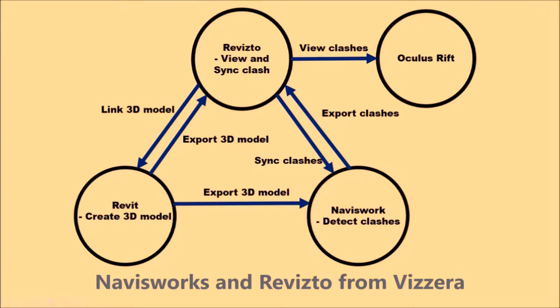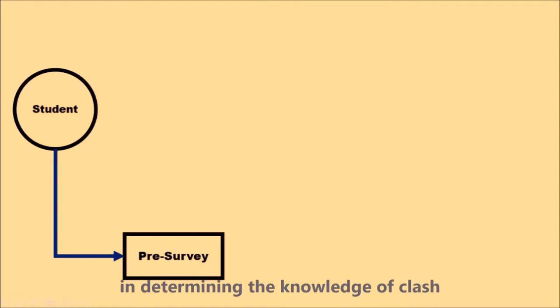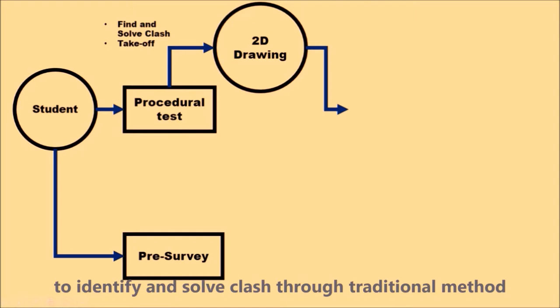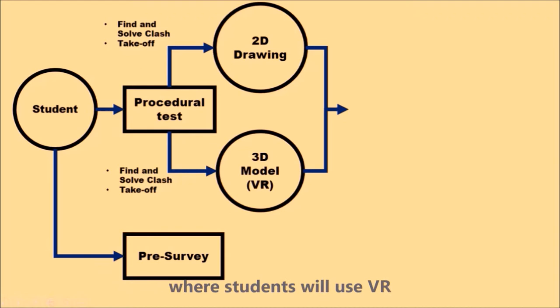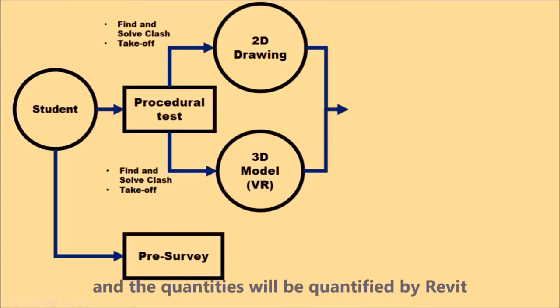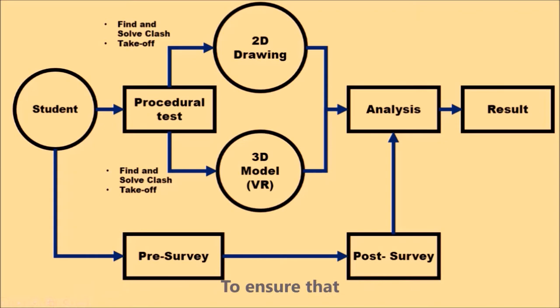In the beginning of this research, a pre-survey will be done to determine students' knowledge of clash among QS students, where students will then identify and solve clashes through the traditional method. A similar process is done in the second stage where students will use VR in finding and solving clashes, and the quantities will be quantified by Revit. Before the experiment ends, students will be asked again about clash knowledge to ensure they already understand clash detection, and a review of their experiment experience will be done.